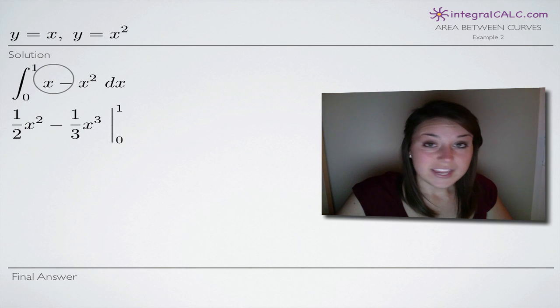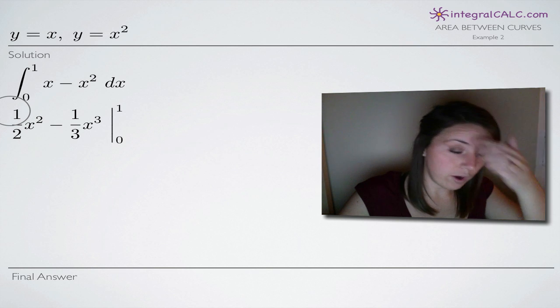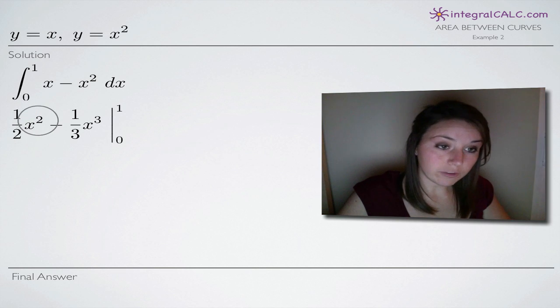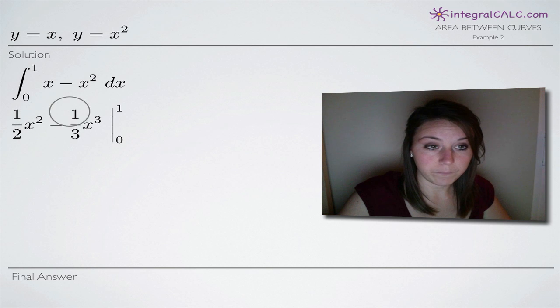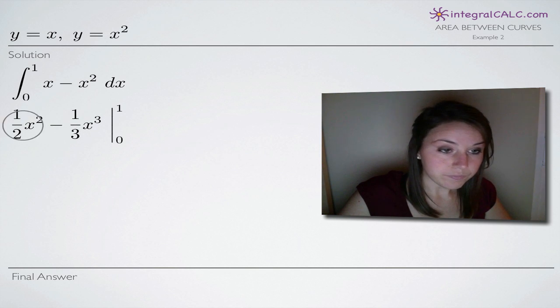So to integrate, we'll take it term by term, looking at this x term here first. The exponent on this x term is one. It's implied, we don't write it, but we have x to the one right here. We add one to the exponent when we integrate. So one plus one gives us two. We divide the coefficient, which is also an implied one, by the new exponent, two. So we end up with one half x squared. Same thing here, we add one to the exponent. So two plus one gives us three. And then we divide our coefficient, which is one, by the new exponent, three. So this is the result after we integrate.